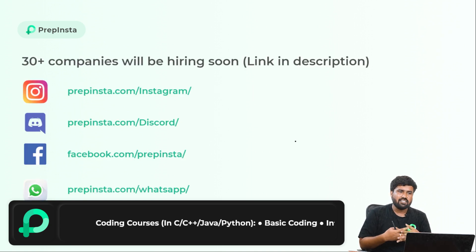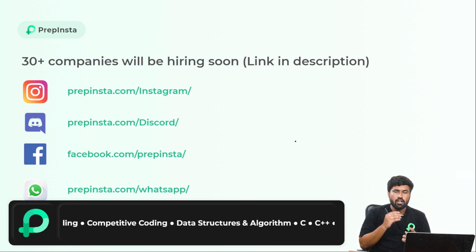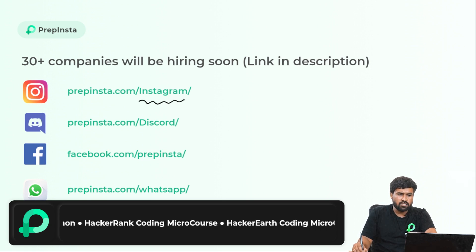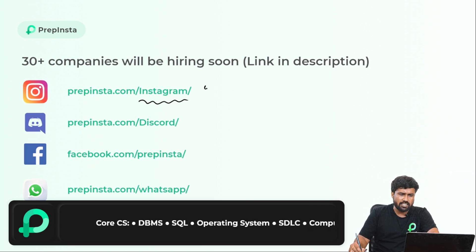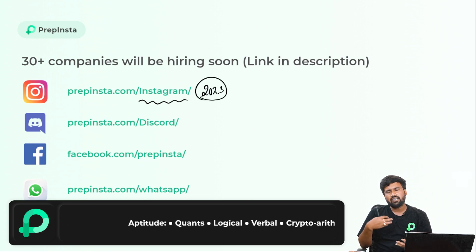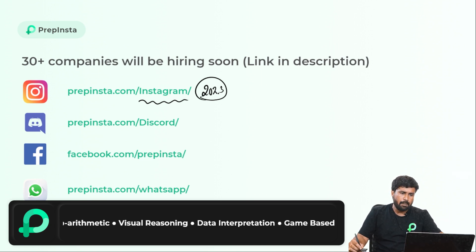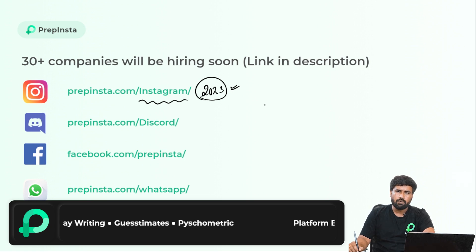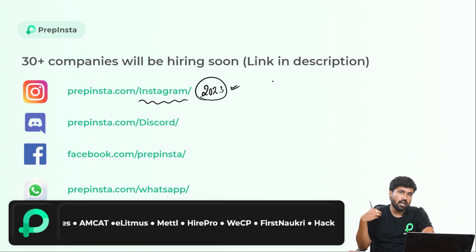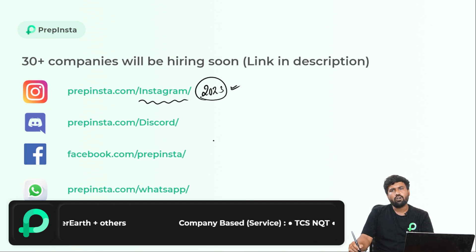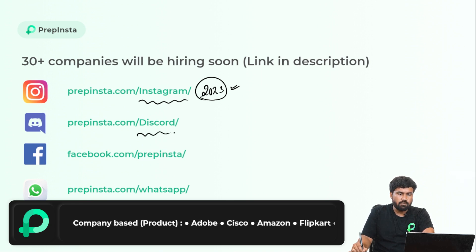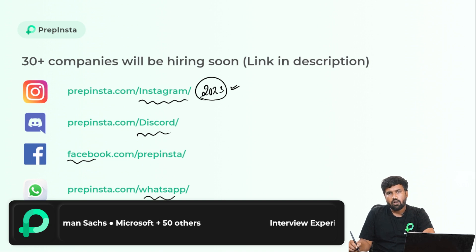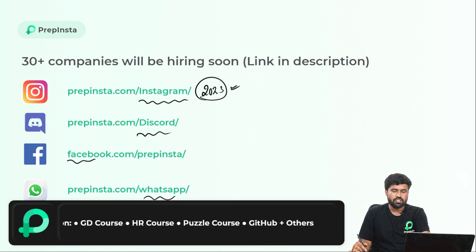A lot of companies are hiring soon, so I always suggest you be on our Instagram handle so that you can get immediate notifications of any company hiring. If you are a 2023 batch, we have a specific page for 2023, and specific pages for 2022 and 2024. Please go to the particular Instagram handle so that you will get specific notifications only, not generalized ones. If you want to contact us and ask your doubts, you can reach our social media handles like Discord, Facebook, WhatsApp, and Telegram. Without any further delay, let's get started with the advanced quantitative ability.